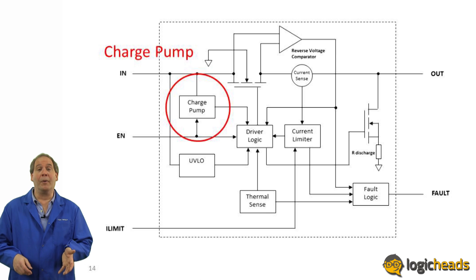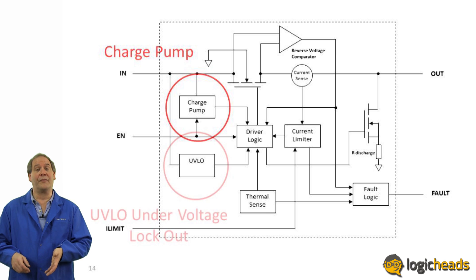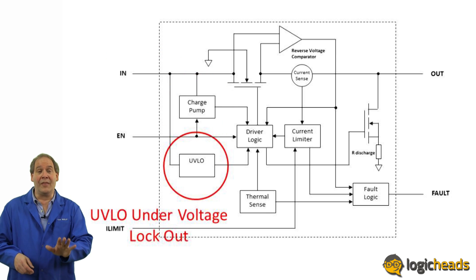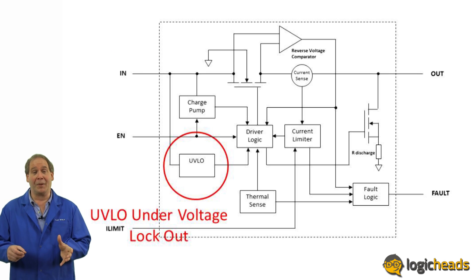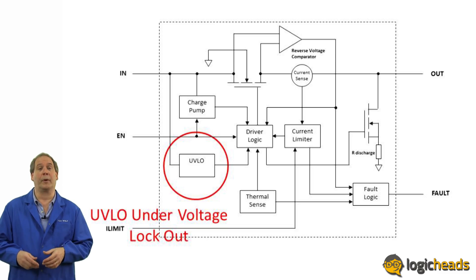Sometimes though, even with the charge pump, the voltage is just too low for the FET to operate correctly. In this case it's useful to have a protection circuit called the under voltage lockout, which like the name implies simply shuts down the entire load switch if the supply voltage goes too low for even the charge pump to work.